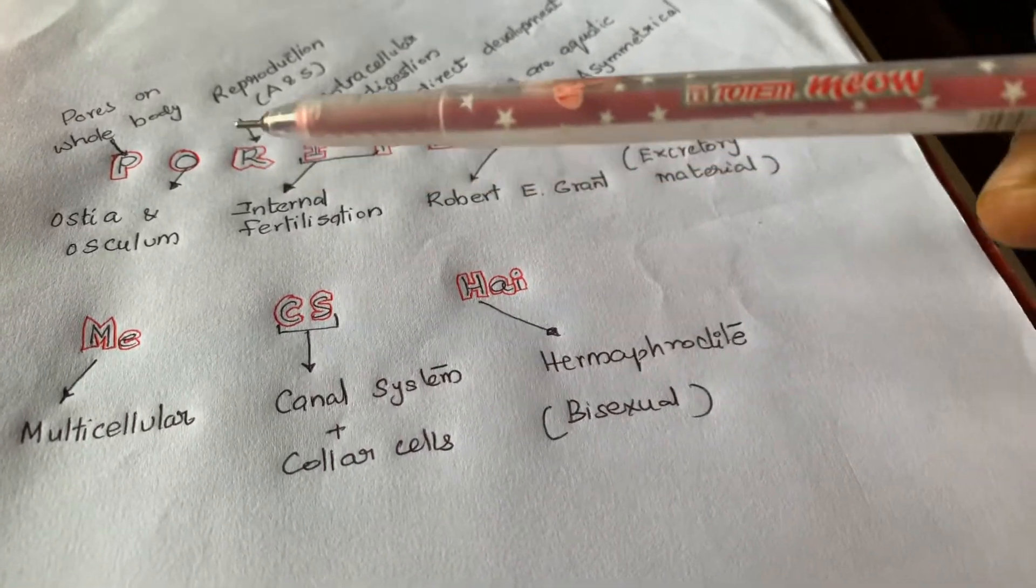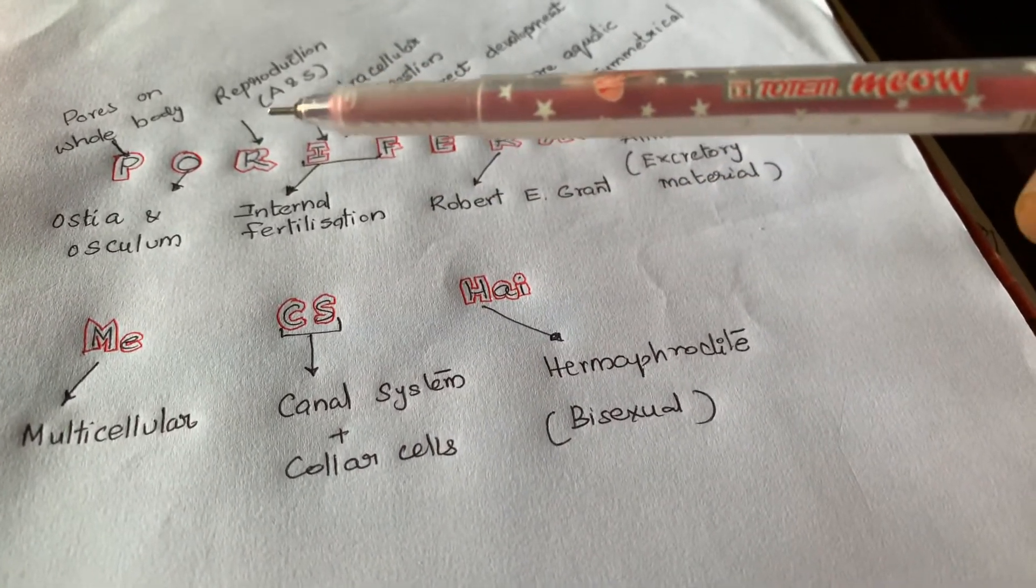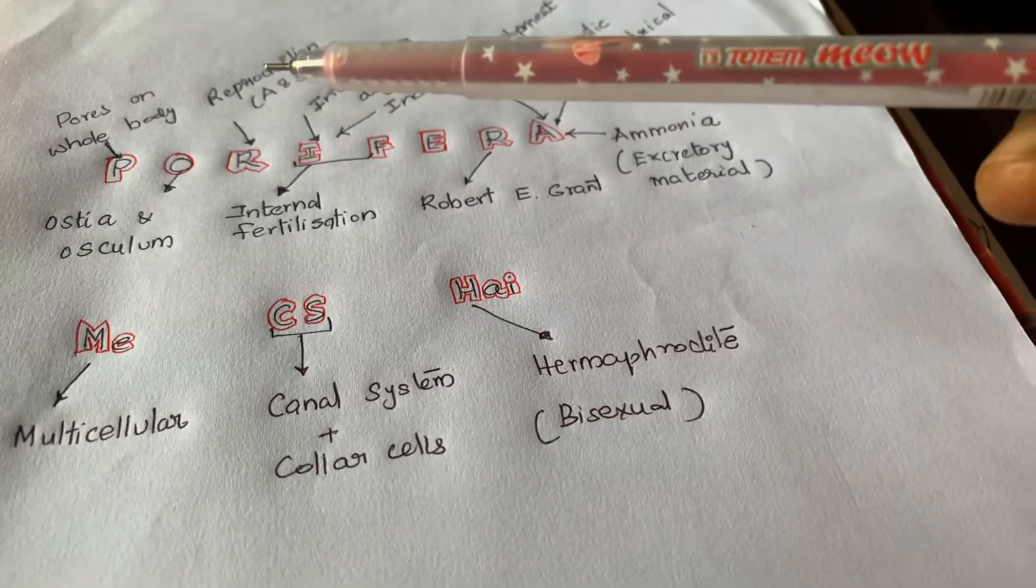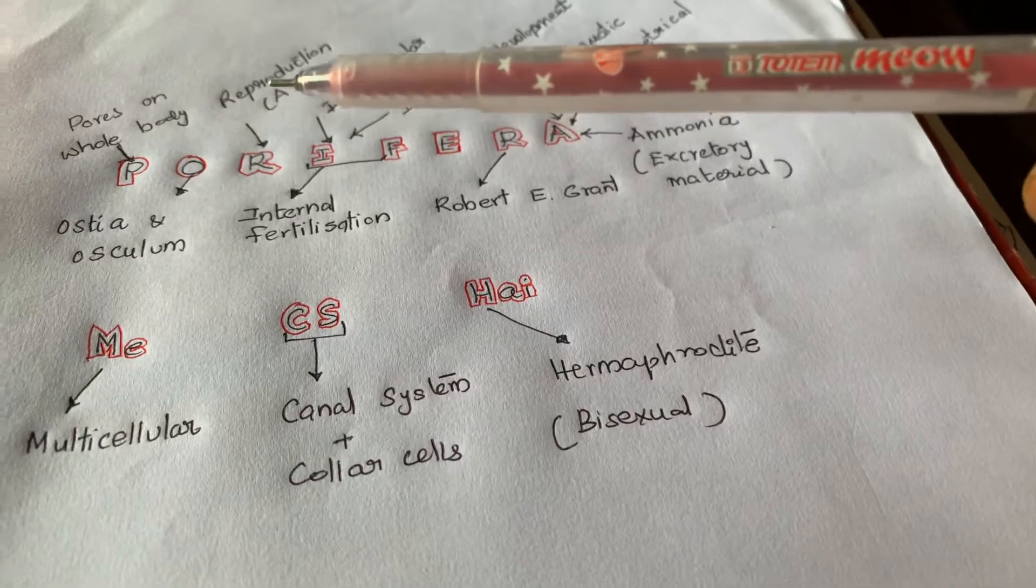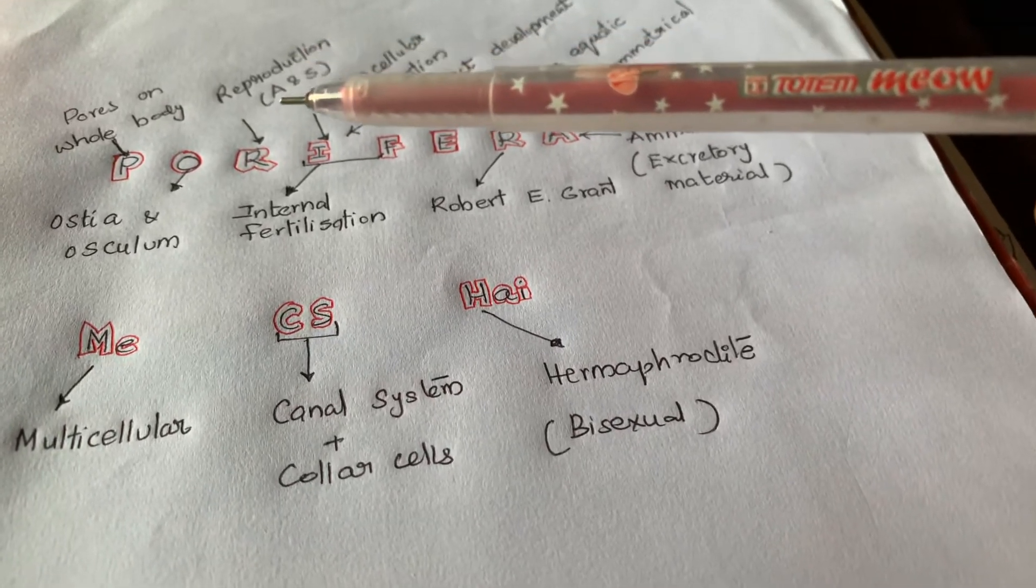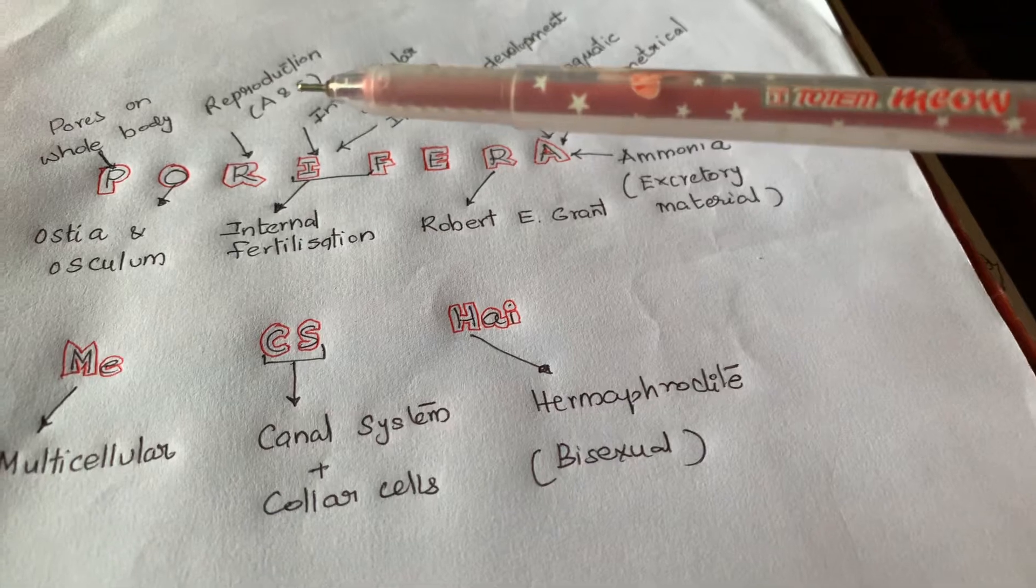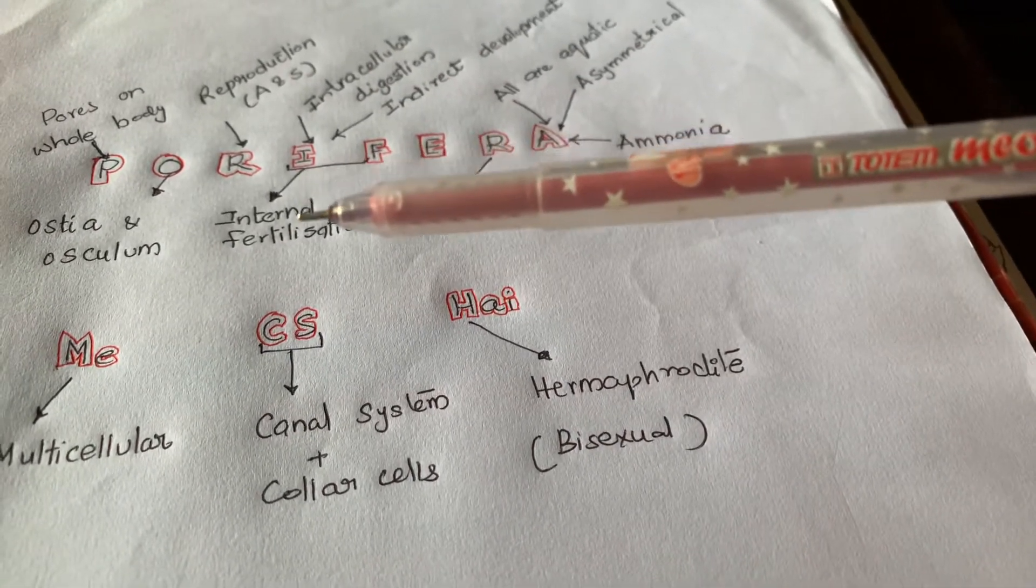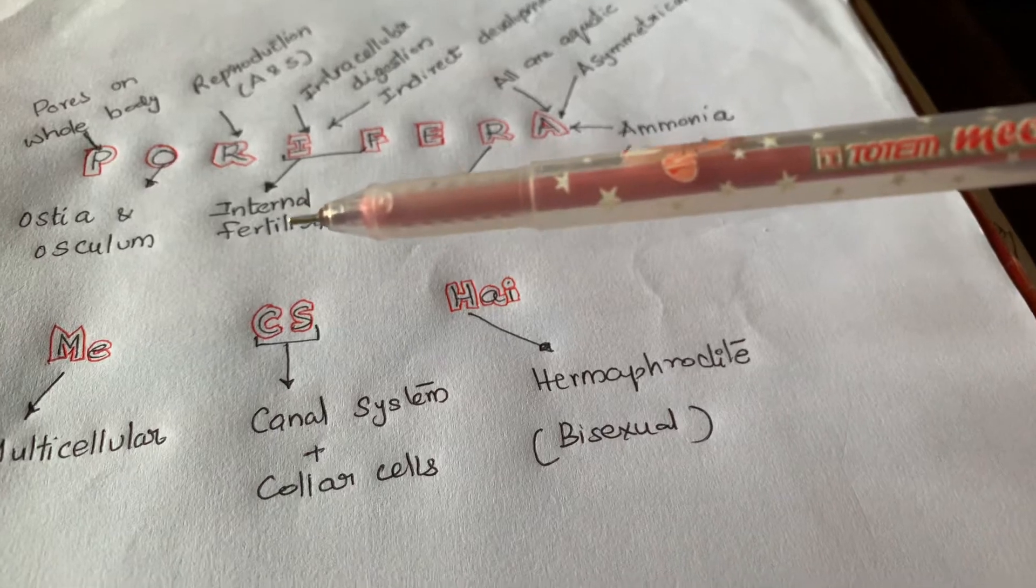Now coming to R, reproduction takes place both asexual and sexual methods. Asexual method by budding and also fragmentation. Sexual method by gamete formation, and the fertilization will be internal inside the body.